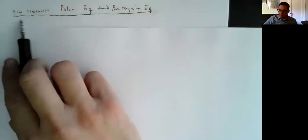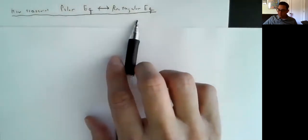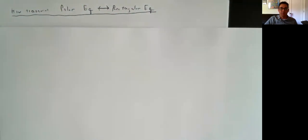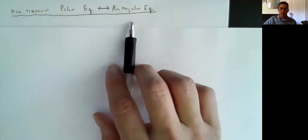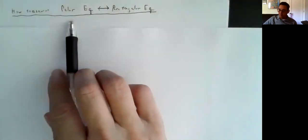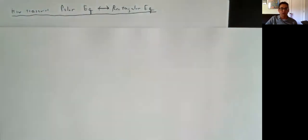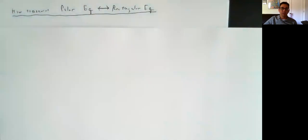We are going to be talking about how to convert polar equations into rectangular equations, or the other way, rectangular into polar. Rectangular equations are anything that have x's and y's, like y = mx + b for a line, or y = x² for a parabola. Polar equations are graphs that you can draw on a polar grid, and since rectangular has x's and y's, polar equations have r and theta in them.